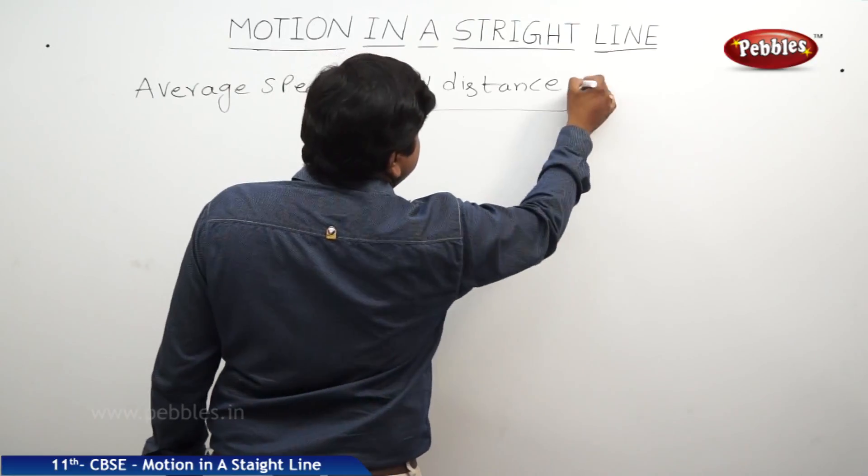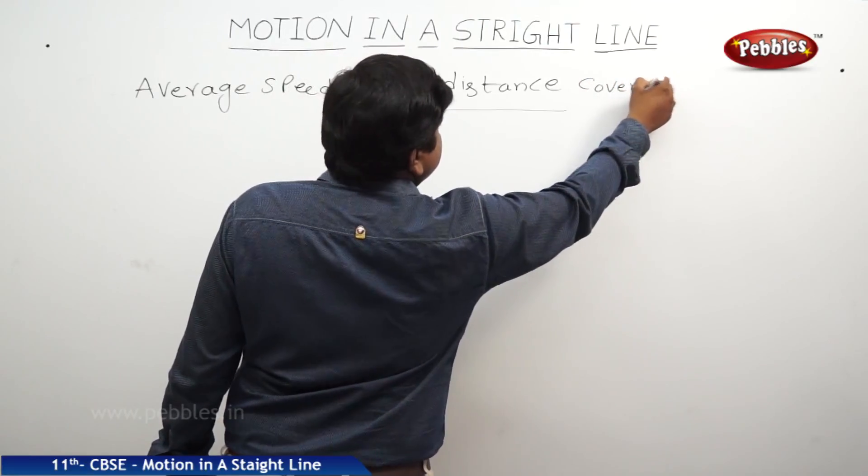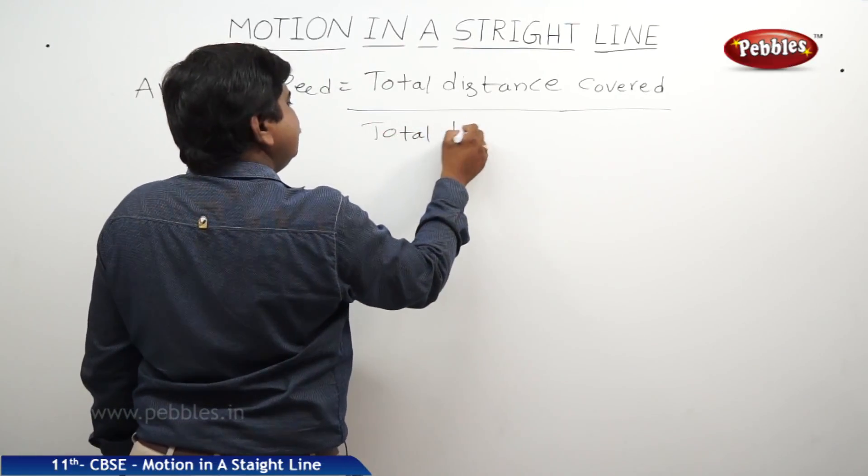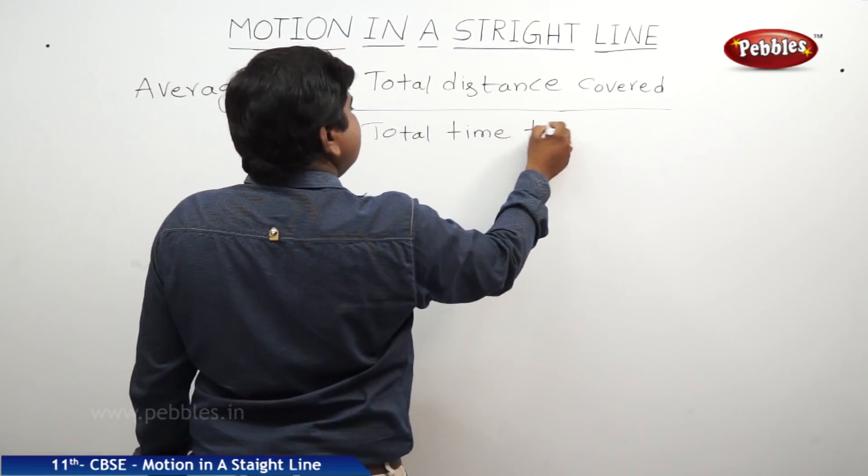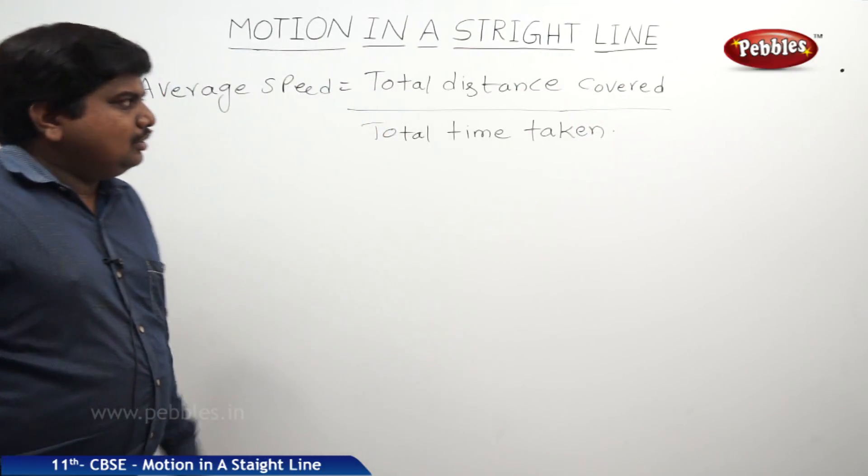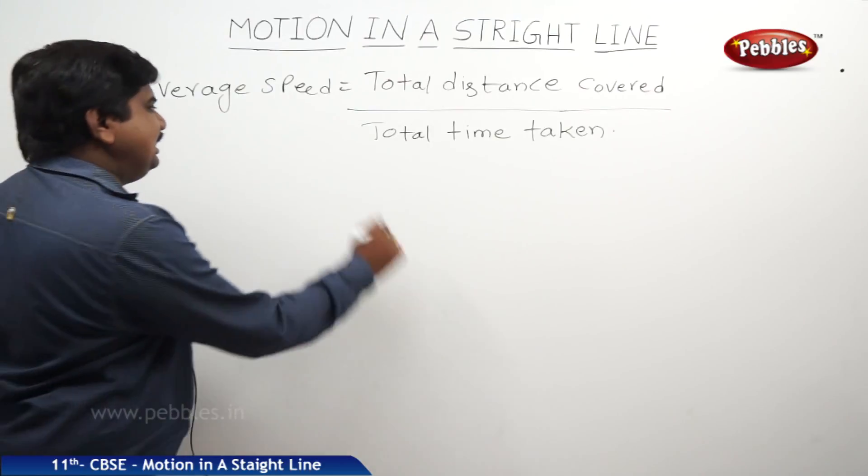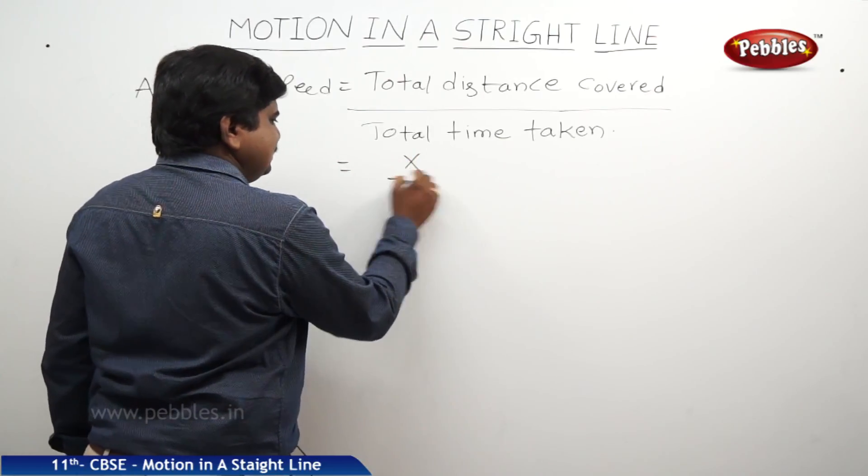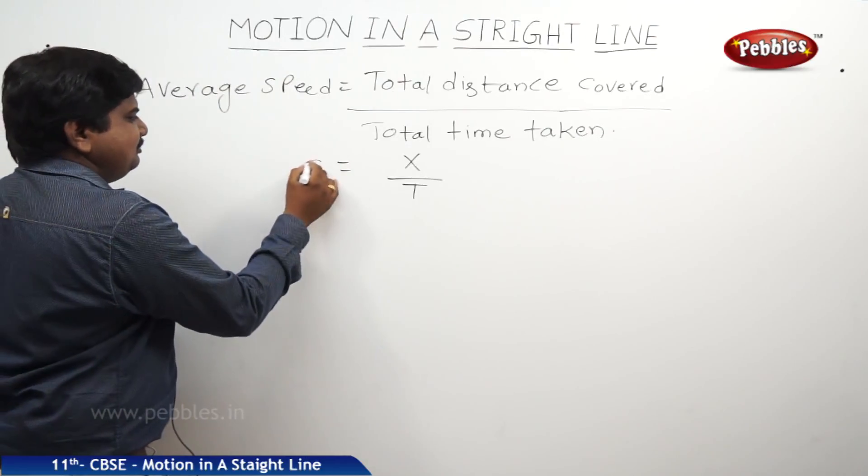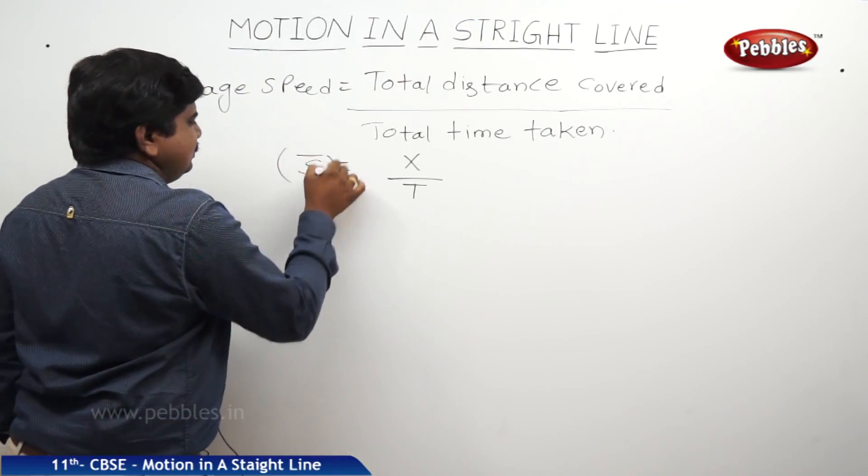So average speed means total distance by total time. Total distance covered, all divided by total time taken. Let us say the total distance covered is capital X. Total time taken is capital T.